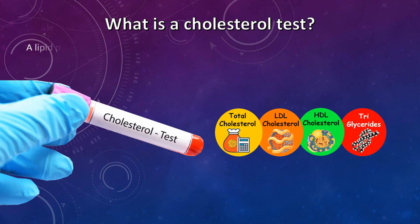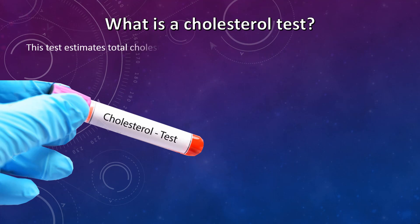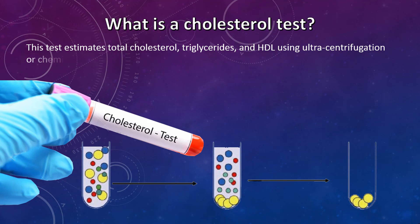A lipid profile test measures total cholesterol, LDL cholesterol, HDL cholesterol, and triglycerides. The test results are in milligrams per dL or millimoles per liter. This test estimates total cholesterol, triglyceride, and HDL using ultracentrifugation or chemical precipitation.